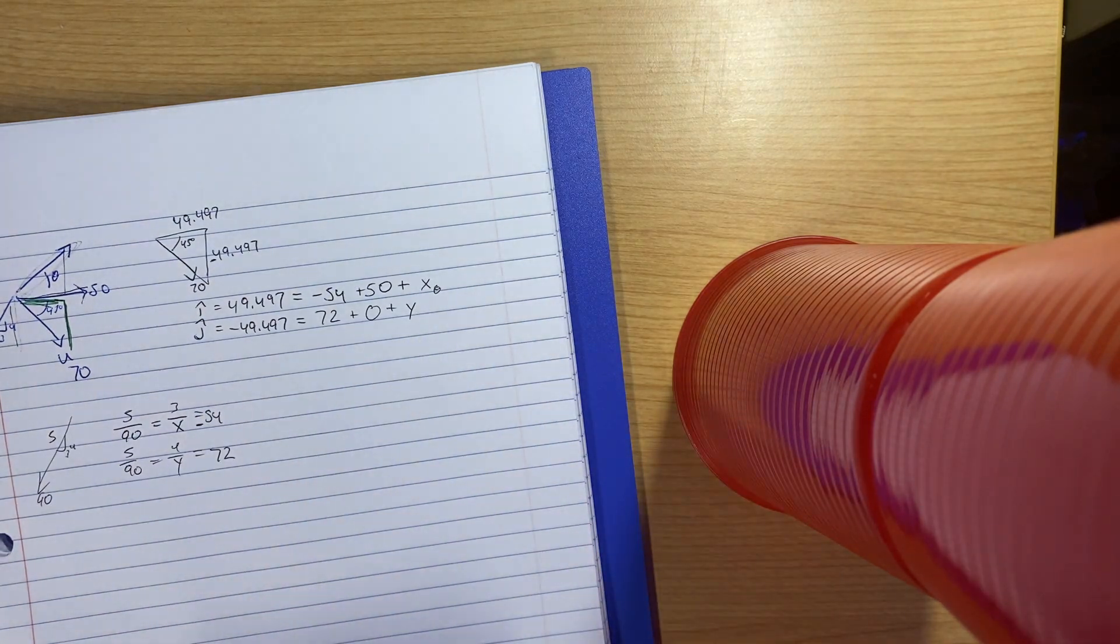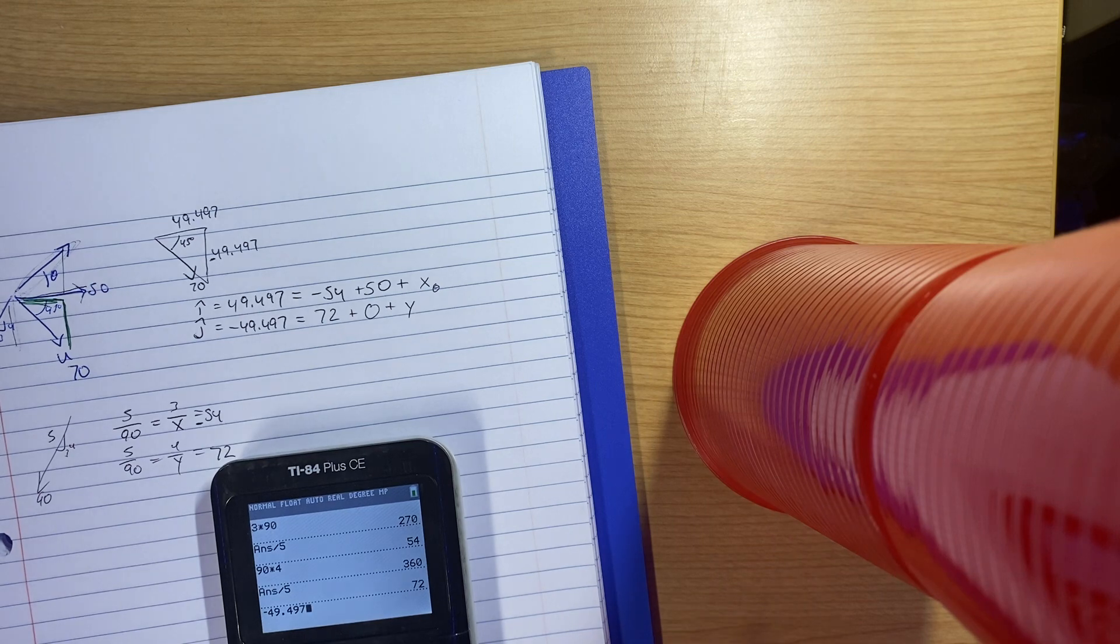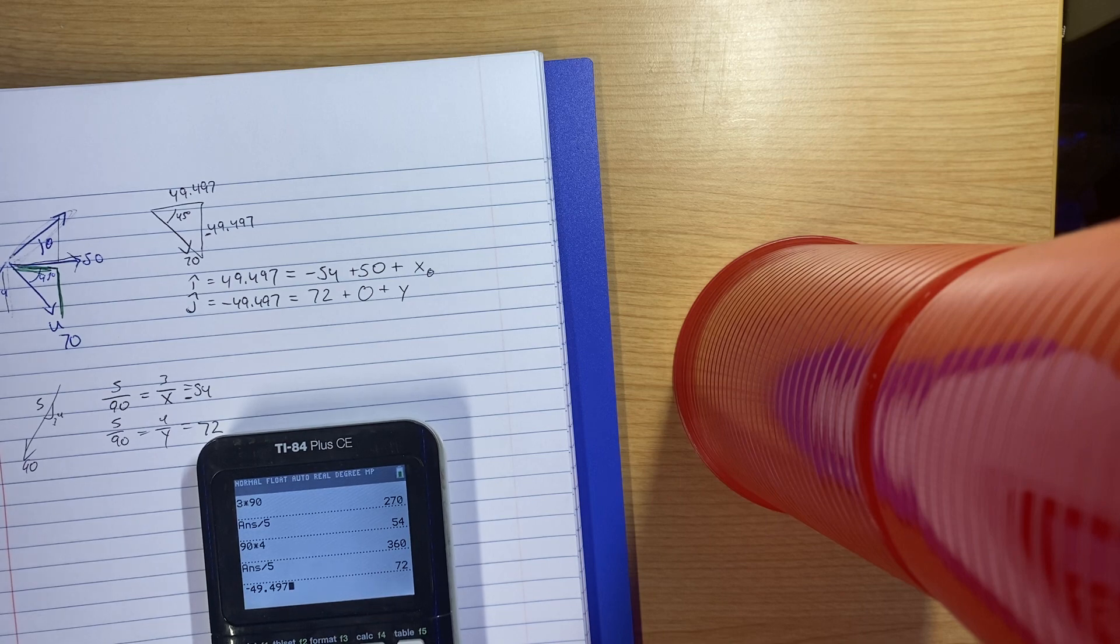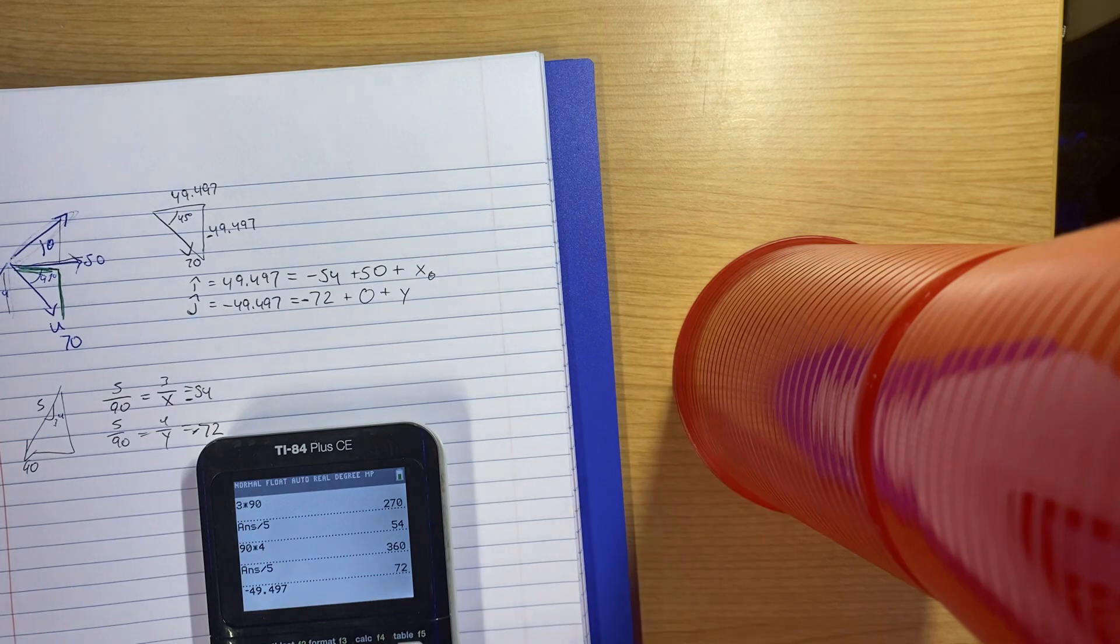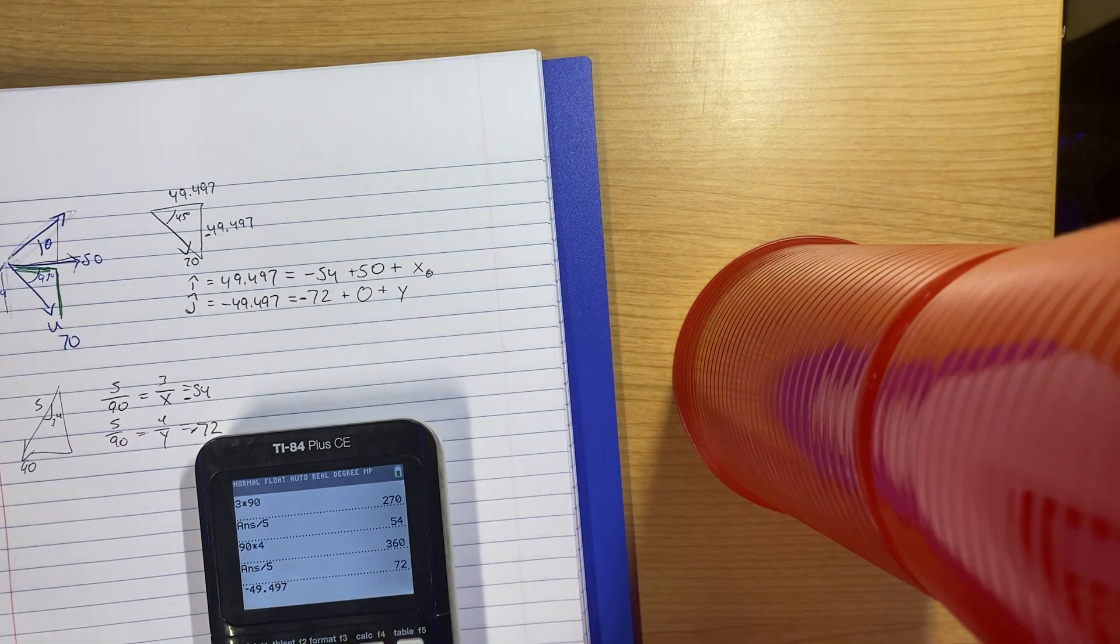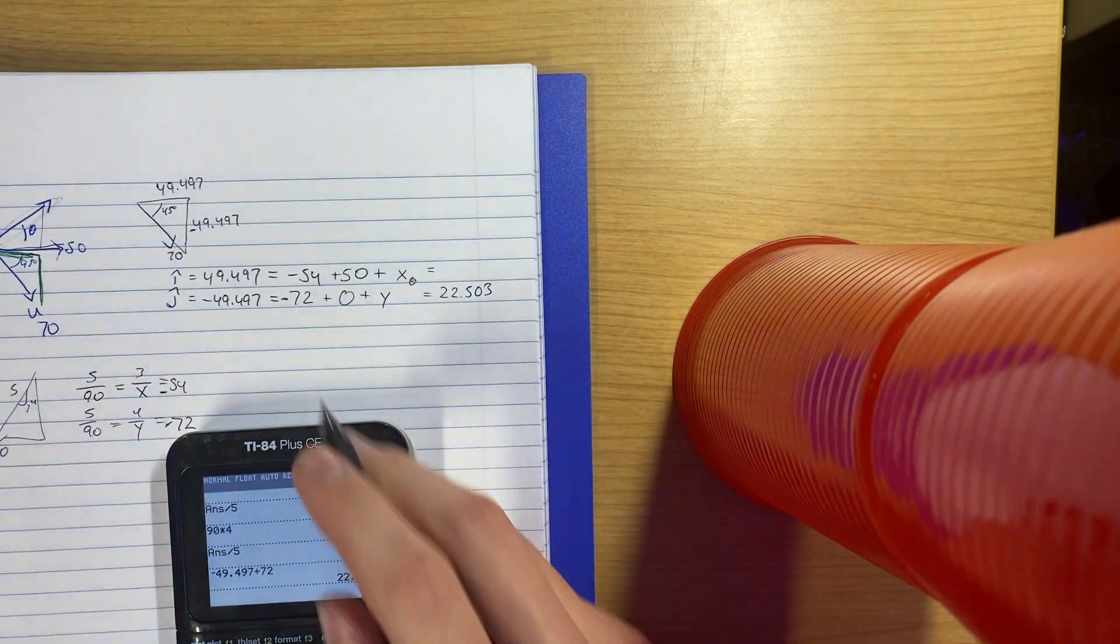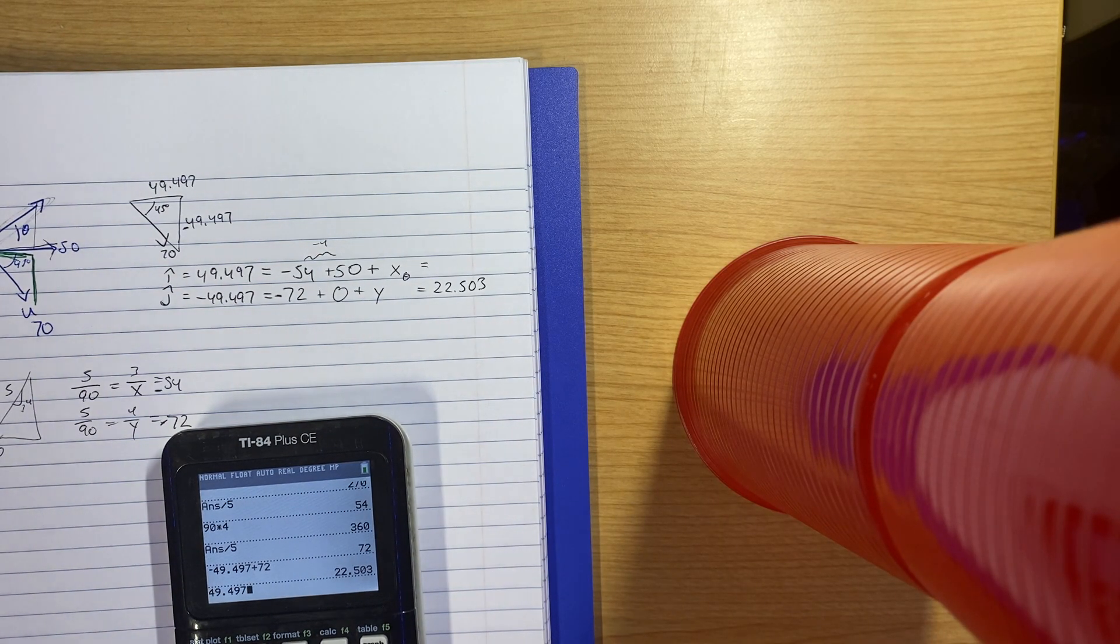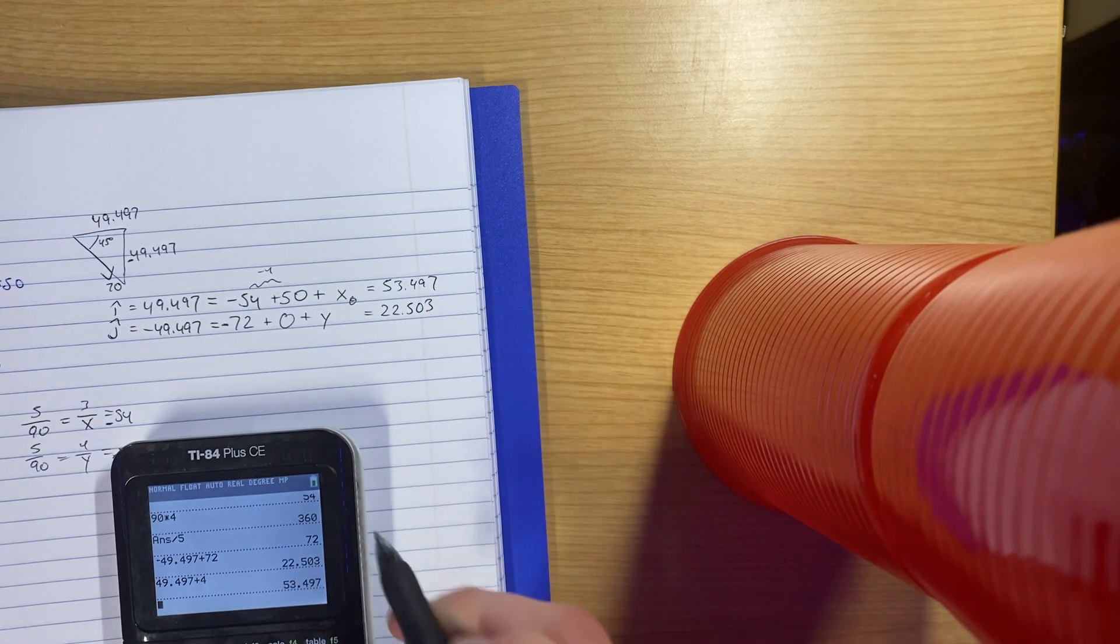So then we solved both of those. I think that gave us negative 49.497. And I'd be subtracting 72. Does that sound right? No, this should be negative 72 as well. This should be negative and negative, so this should be a negative here. Backtrack, that's up. So this plus 72 would give me that my Y component has to be 22.503. And that my X component has to be, this would be a negative 4. So 49.497 plus 4, that'd be a plus 4. It's 53.497. So do you get that?